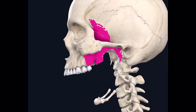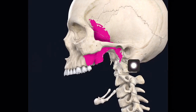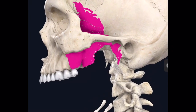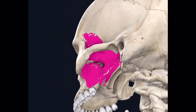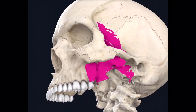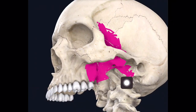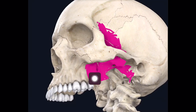Then you have the part of the sphenoid bone here medially, part of the pterygoid plates medially — both the medial and lateral pterygoid plates as boundary here — and then posteriorly you have the styloid process. So this forms the posterior surface.